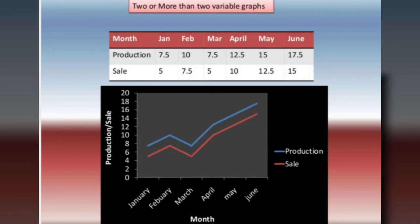You can see in this picture the different months are given: Jan, Feb, March, April, May and June. And with respect to this, production and sale is also given. Production with a blue line and sales with a red line. This is what a good and attractive graph with better interpretations looks like.